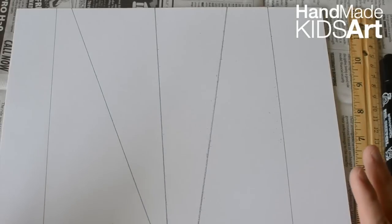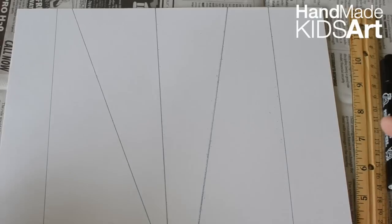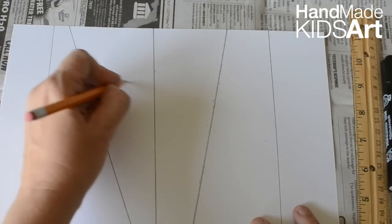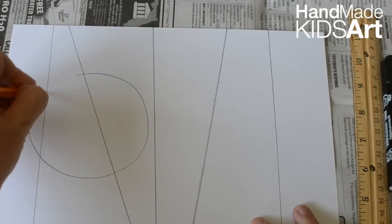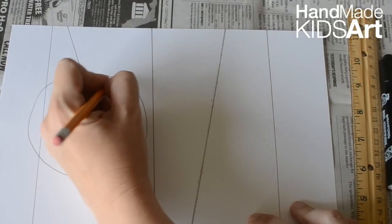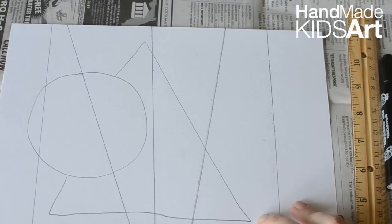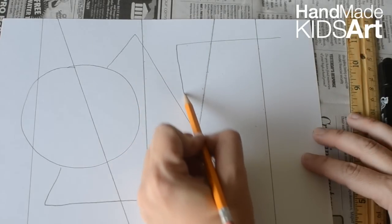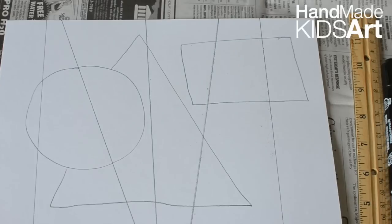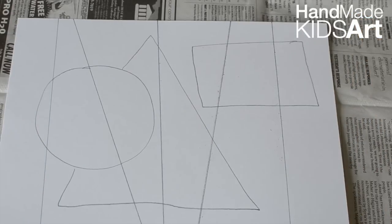And next I'm going to draw three shapes on top of my lines. So you can decide if you want a circle, a triangle, a square. And I'm just going to freehand my shape. So I'm going to do one circle. I'm going to do one triangle. And I'll do a rectangle off to the side over here. So think about it. Decide where you want to place your shapes. Alright, now that I have my shapes drawn in, I am going to start coloring.